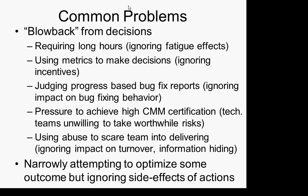Judging progress based on bug fix reports can be related to that. Using abuse to scare team members into delivering — shouting at team members if their code quality is not high enough, intimidating people — can lead to turnover, information hiding, et cetera. A common thread of many of these decisions is that they're overly narrow. They focus on certain effects and ignore broader effects. As a result, things sometimes go bad very quickly — snowballing effects.